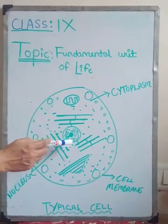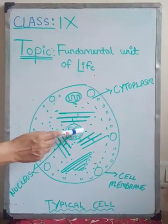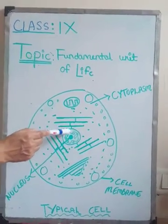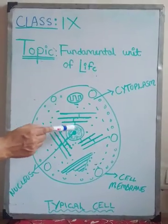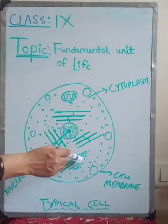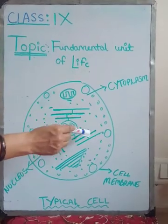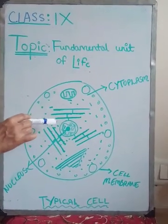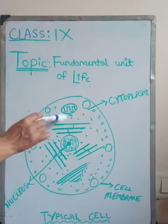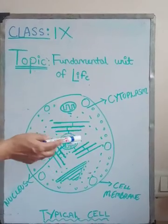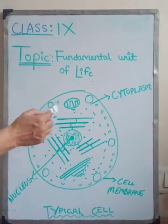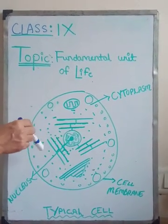Now we are going to understand about the nucleus. We have already discussed the structure of the nucleus. The main function of the nucleus is to control the whole cell. It is called the director of the cell because it is the most important part of the cell, which controls each and every event taking place in the cell.